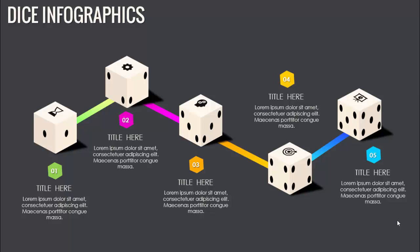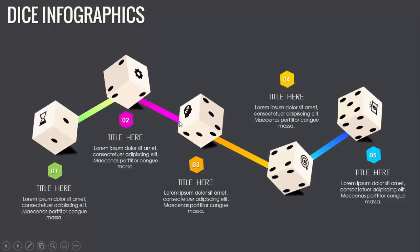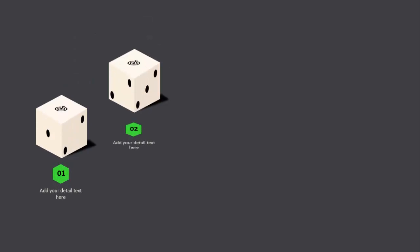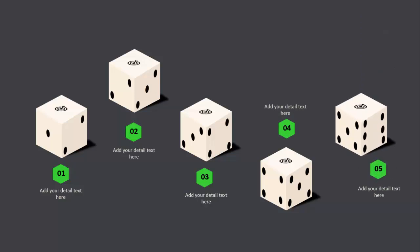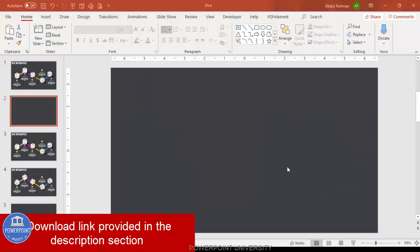In today's tutorial I'm going to show you how to create a dice infographic slide in PowerPoint. I've added five dice, and for each dice I've given option one title and detail text, connecting with dice two, three, four, and five. I've made additional slides with different face values, rotated dice, and one more slide with animation effects where each dice appears one by one and then connects to each other.